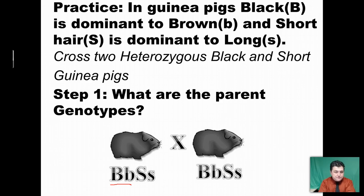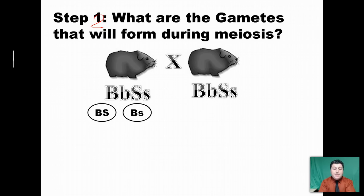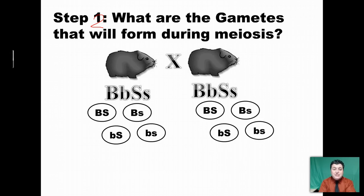Our next question to set up the Punnett square is: what are the unique gametes that form during meiosis? This is step two. Parents pass on half of their traits to their offspring, so we want to figure out all the possible combinations these parents could pass on. For a heterozygous black and short individual, the black gene can go with the short gene, the black gene can go with long, the brown can go with short, and the brown can go with long. That's the principle of independent assortment. Since both parents are identical in genotype, they have the same combinations of alleles to pass down.